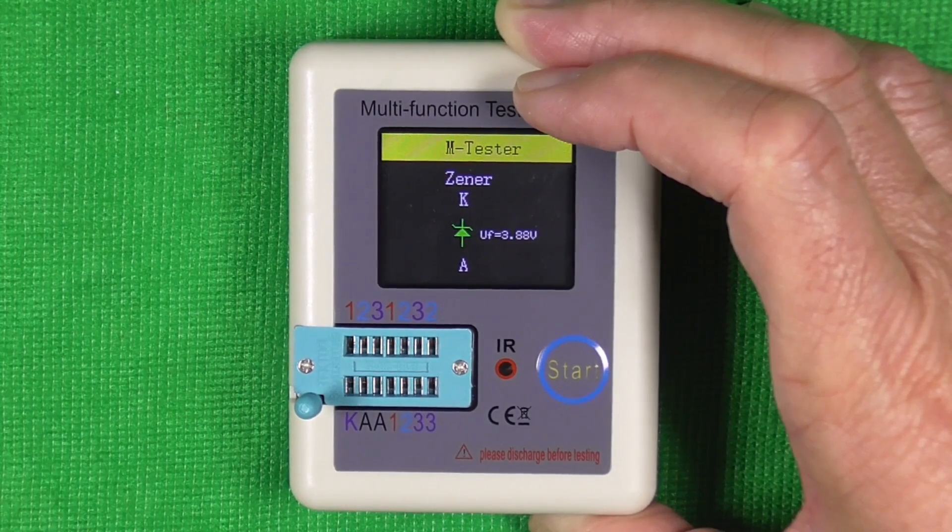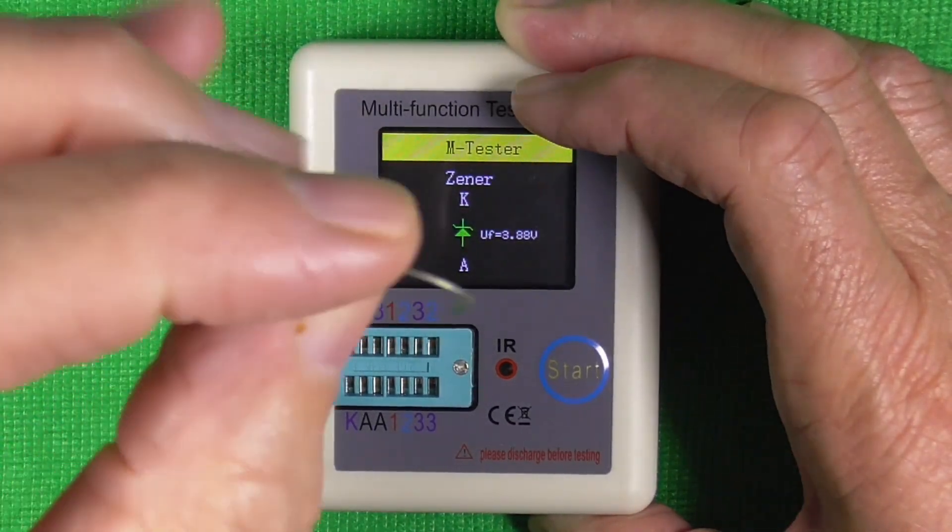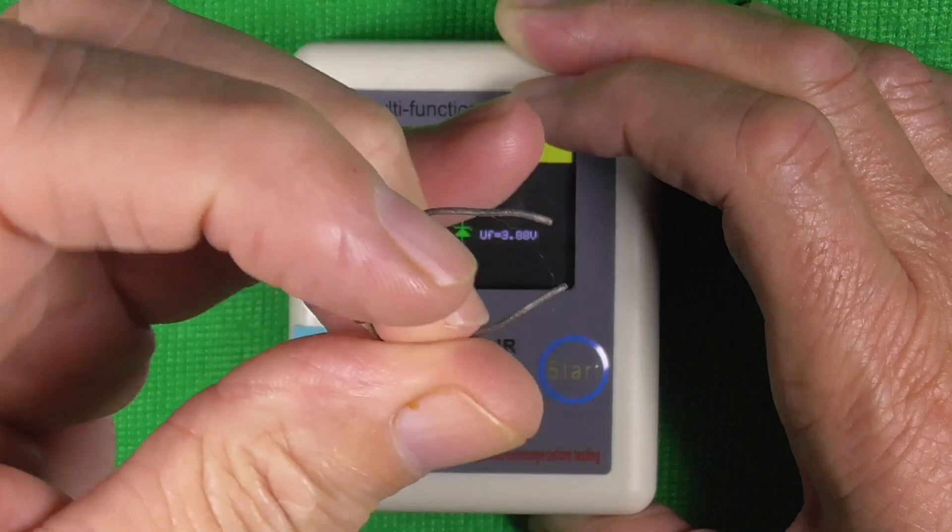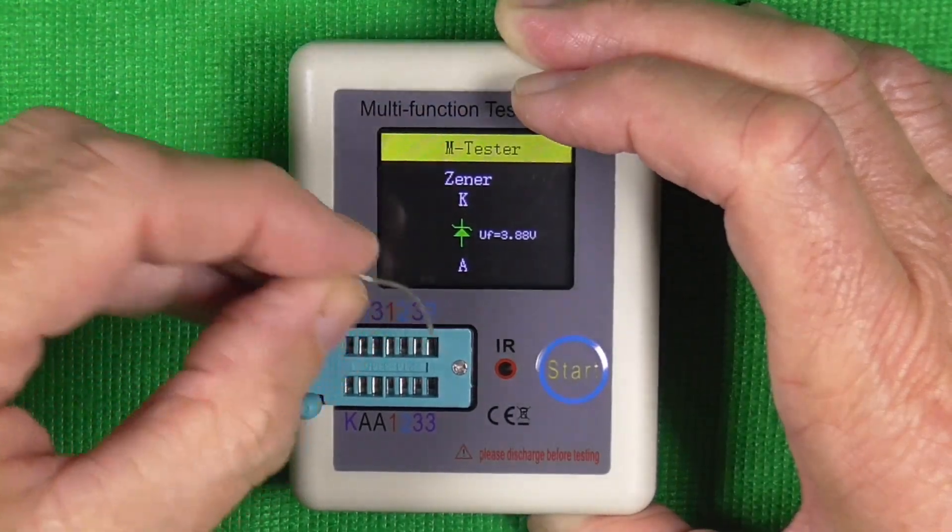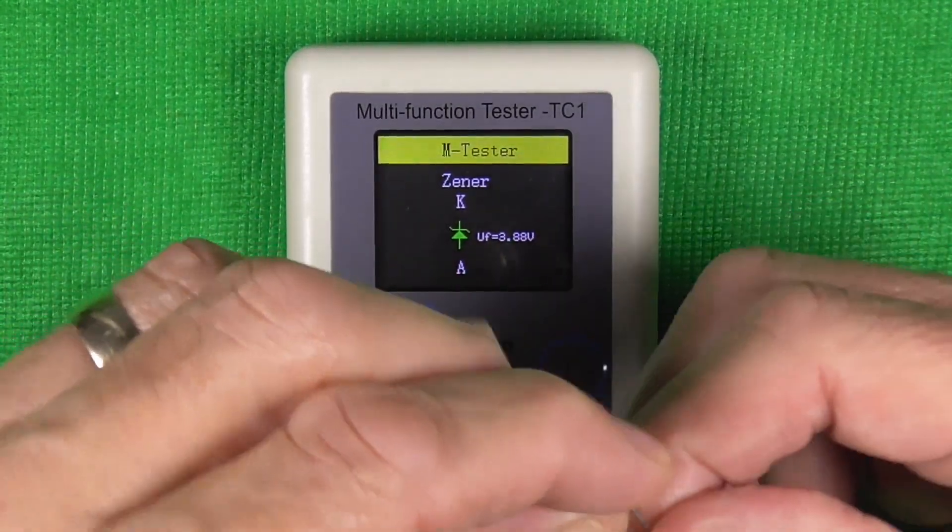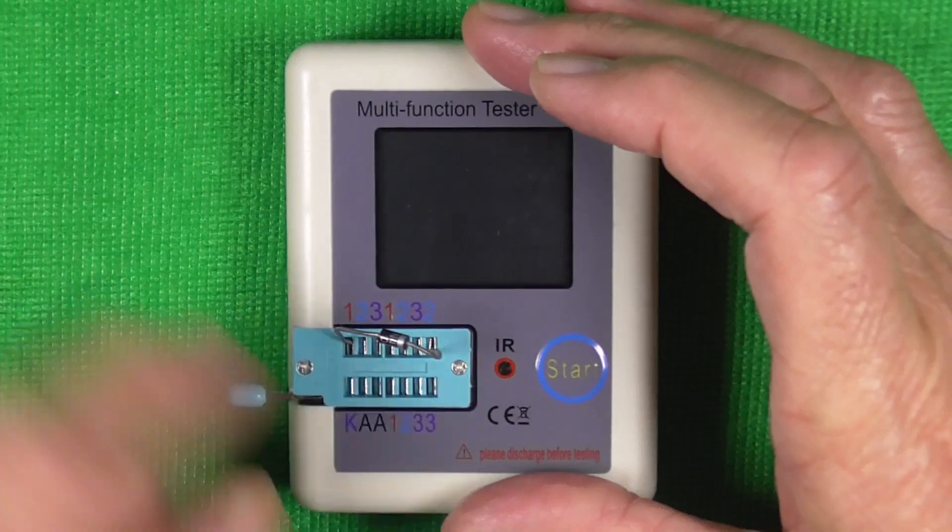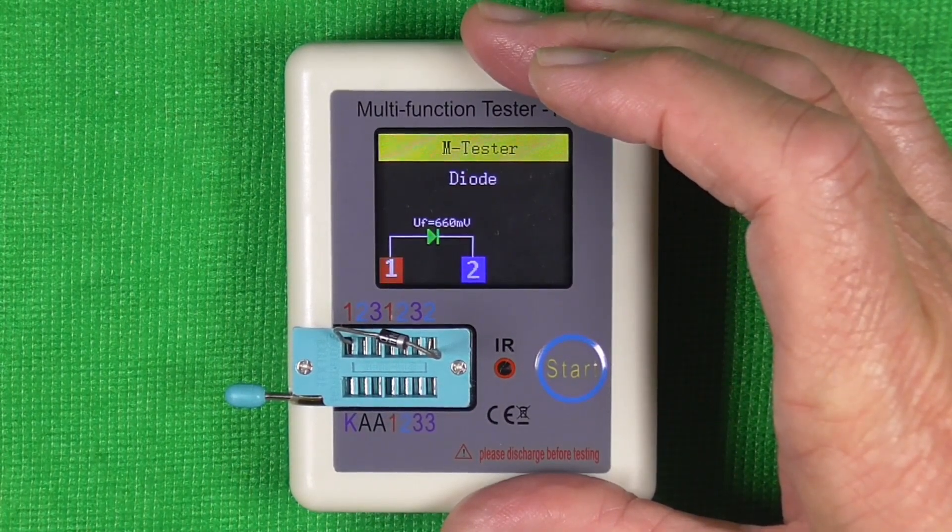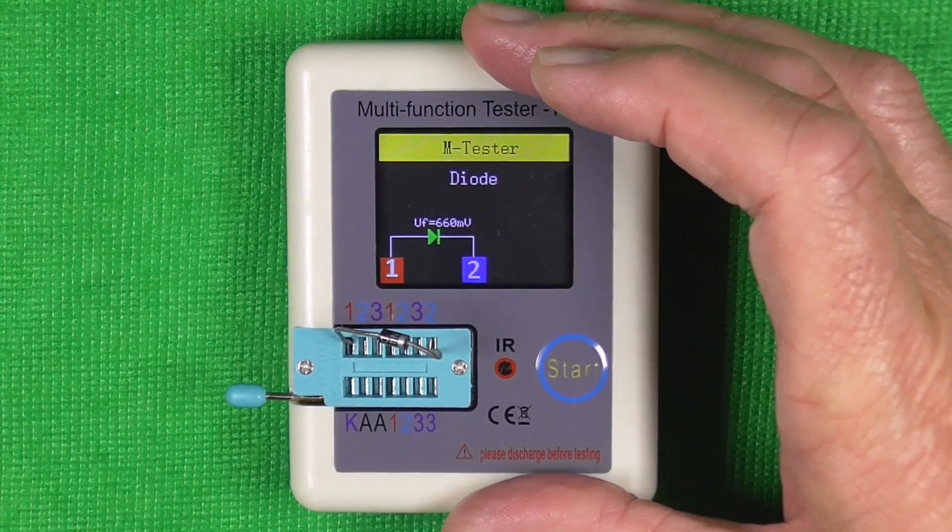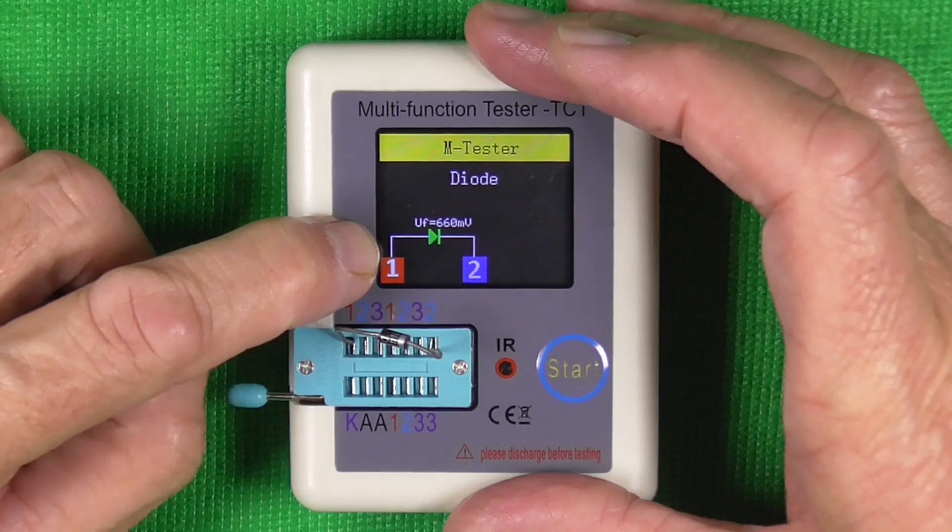What else have we got? Got another diode here. What is it? I can't read it without my glasses, but we'll pop it in and see. Yeah, diode. Identify the polarity.